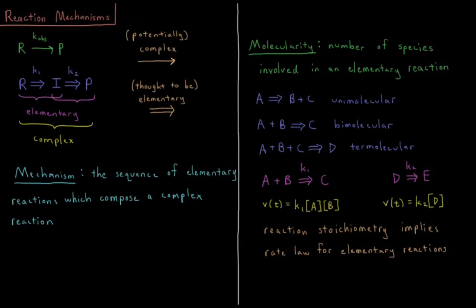This video will discuss reaction mechanisms in chemical kinetics. So what we've been looking at thus far is a case where we have some set of reactants and we go to some set of products in a chemical reaction, and there is some rate constant here which we'll call K observed.